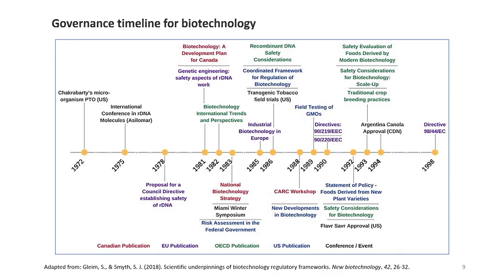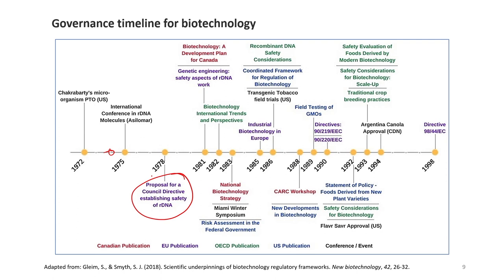This is a brief timeline on the governance of biotechnology. In 1972, the first patent on a live organism was awarded to Chakrabarty, and then in 1975, the international conference on recombinant DNA molecules was held. Prior to that, the Gordon Research Conference was held as we discussed. By 1978, there was a proposal for a council directive establishing safety of recombinant DNA, and in the years 1981 to 1983 there were many activities.